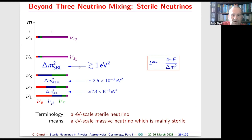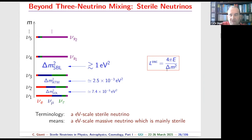If we add one sterile neutrino at a mass scale of about one electron volt, we get one additional Δm² — which we can call the short-baseline Δm² — that can explain certain experimental anomalies. Of course we can add more than one sterile neutrino, but I will focus mostly on the 3+1 framework with one additional massive neutrino.